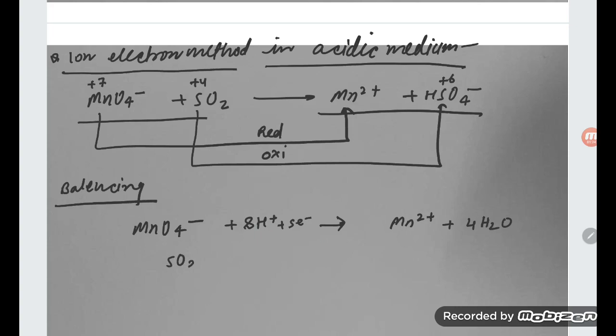Now go for the SO2. It is converting into HSO4 minus. Here oxygen is 4 and here is 2. So this side we need how many? Two water molecules, right? Hydrogen, you see student, 4 here and 1 here. So 3H plus required this side.